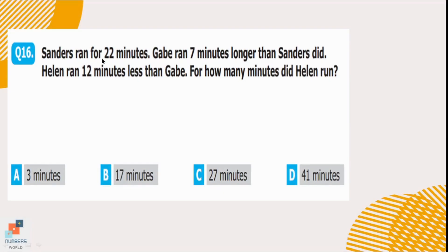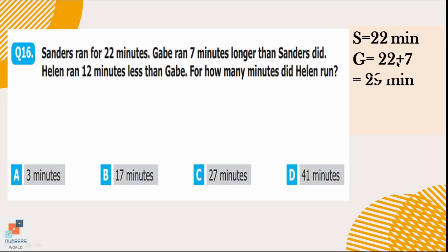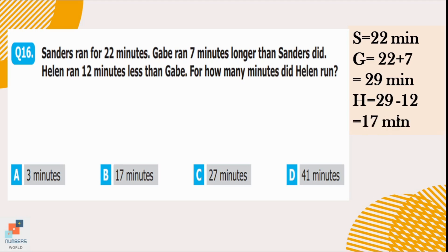Question number 16. Sanders ran for 22 minutes. Gabe ran 7 minutes longer than Sanders, so we add 7 to 22 — Gabe ran for 29 minutes. Helen ran 12 minutes less than Gabe, and less means subtraction. So we subtract 12 from 29: 29 minus 12 equals 17 minutes. Helen ran for 17 minutes — option B.